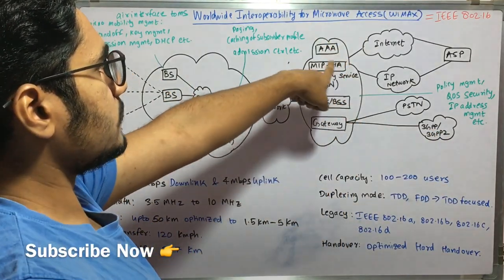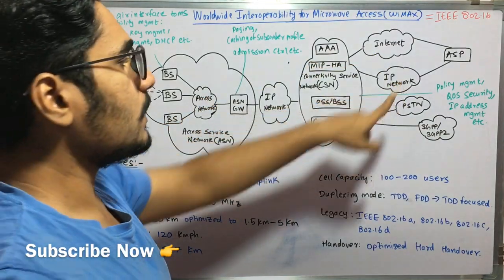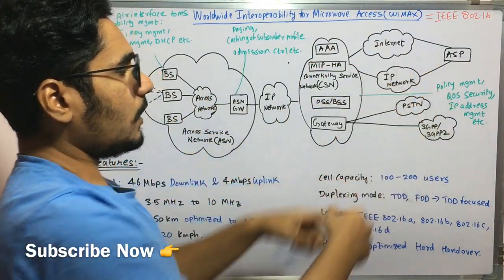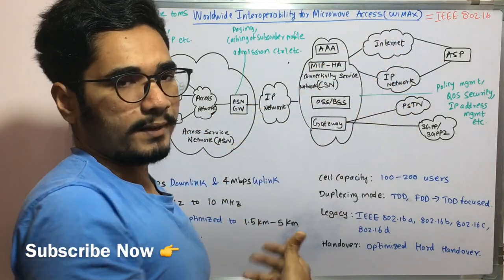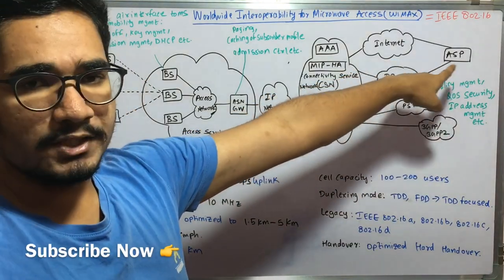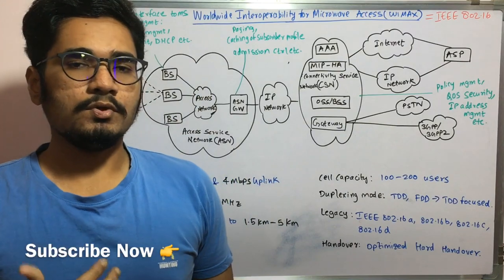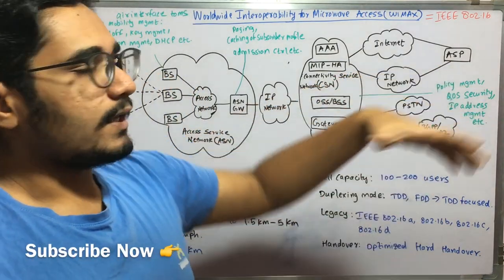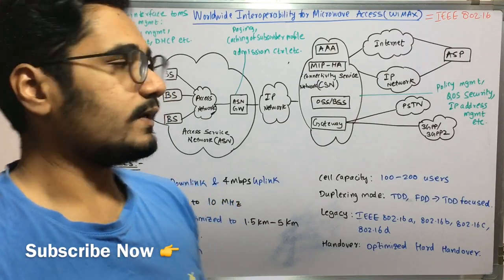Whereas if you move above you have this AAA and MIP connecting to the internet as well as the IP network. So there is a second layer of IP network over here which just rules or filters the proper IPs from here and then it's connected to the ASP that is application service provider. So there you get the front-end application to view all your applications regarding what all transactions you have done or what all data transfers you have done over the WiMAX system.